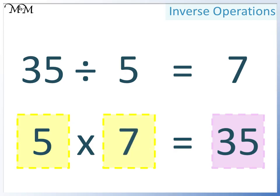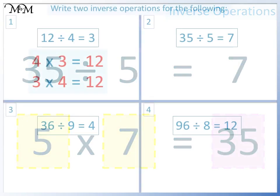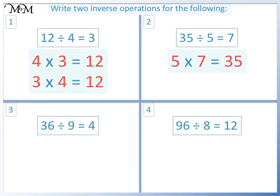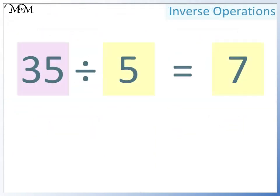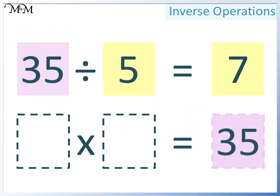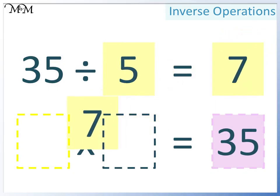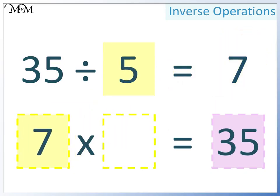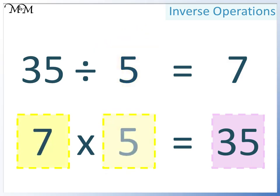5 times 7 equals 35. 7 times 5 equals 35.